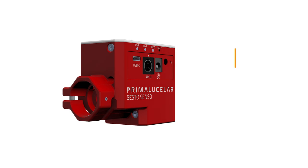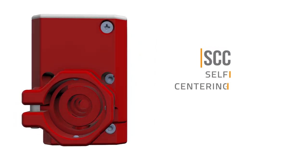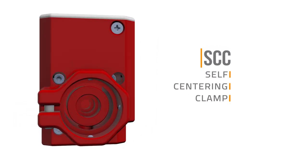When we designed Sesto Senso we wanted to find a way to remove the need of external brackets since these are not very handy to use and may create problems with different telescopes. The self-centering clamp is the solution our design reached by analyzing many focusers on the market.